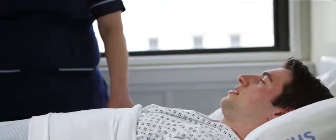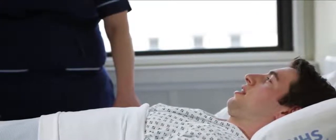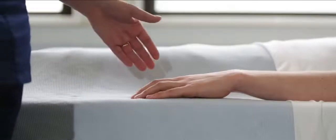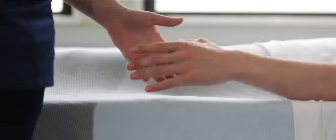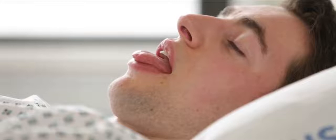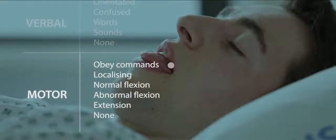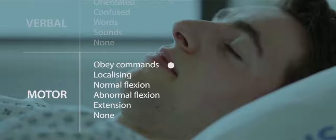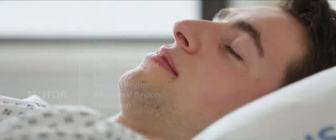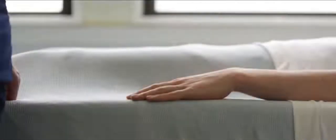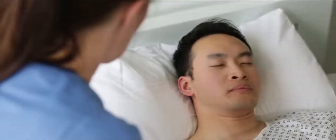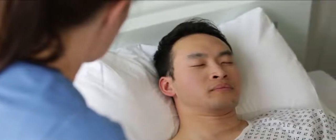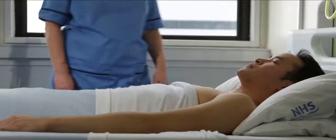To assess the motor component of the coma scale, first ask the patient to perform a two-step action by asking them to grasp and release your fingers with their hand, or opening their mouth and sticking out their tongue. If the patient does this, record 'obeys commands'. If the person can't move their arms, for example because of a spinal injury, ask them to open their mouth and stick out their tongue. In a patient who does not obey commands, a peripheral stimulus alone is inadequate to assess the motor component, and an additional central stimulus is needed.